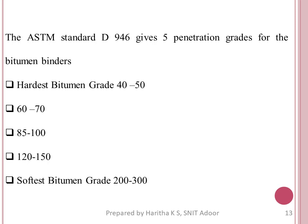According to ASTM (American Society for Testing of Materials) bitumen grade classification, the hardest bitumen grade is 40 to 50. Then grades progress through 60 to 70, 85 to 100, 120 to 150, and 200 to 300, which is the softest bitumen.